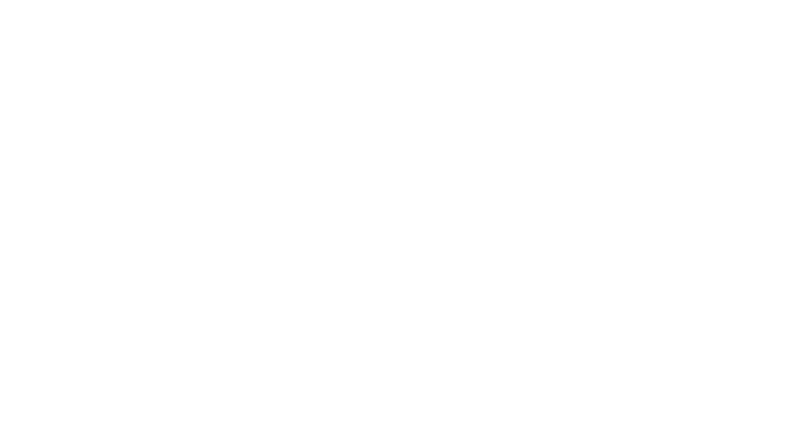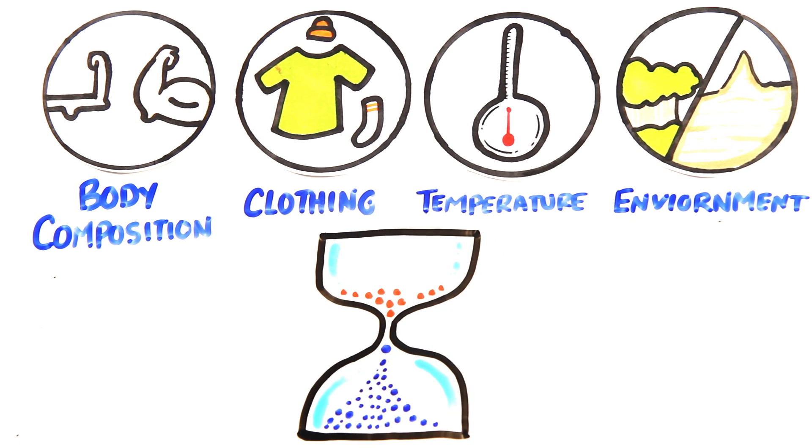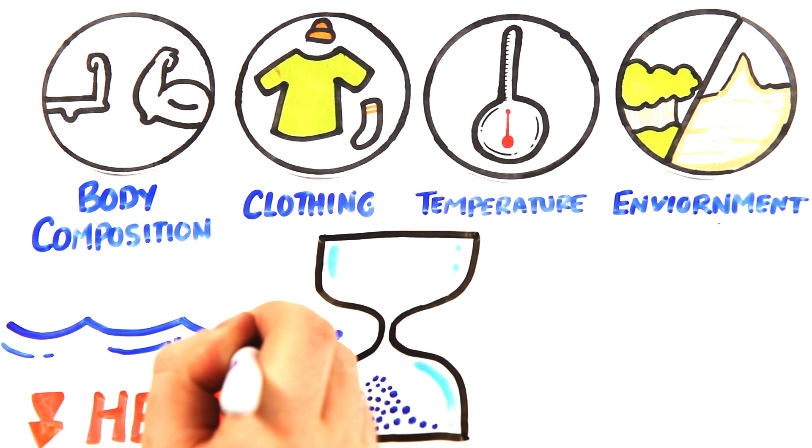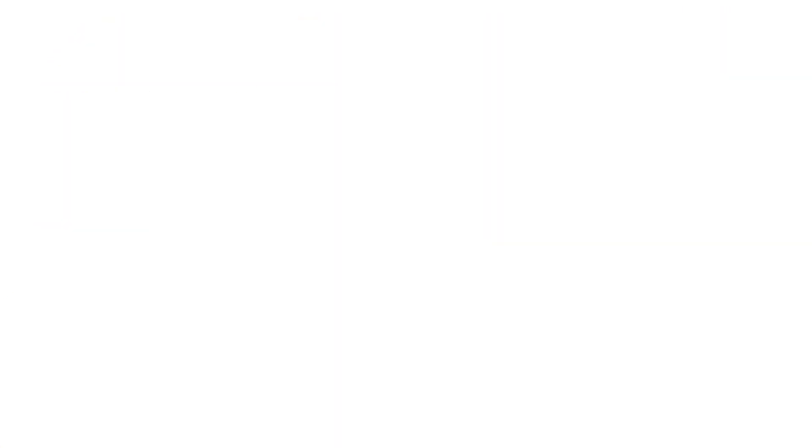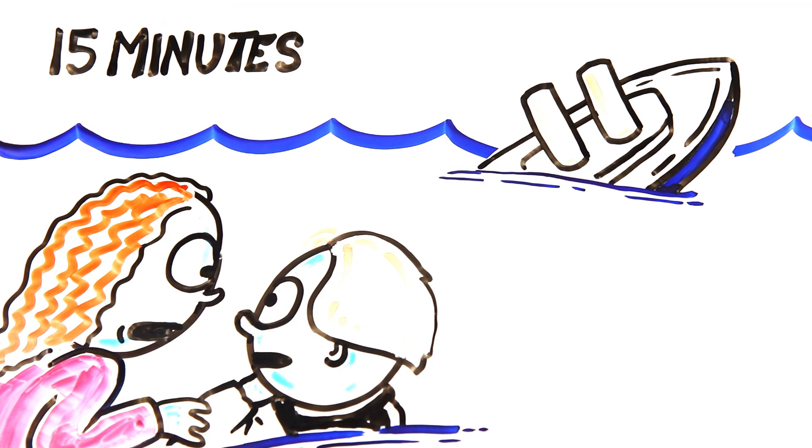Now, several factors including body composition, clothing, temperature and the environment determine how quickly your core body temperature drops. For example, heat is lost much more quickly in water than in air. Those who were submerged in the icy waters after the sinking of the Titanic may have lasted only 15 minutes.